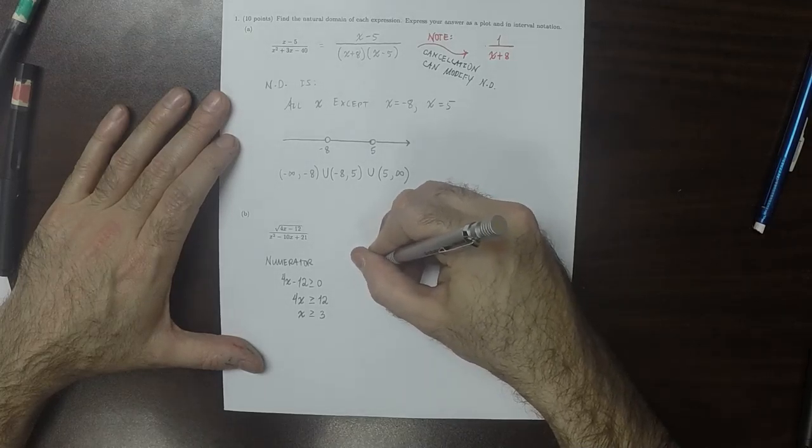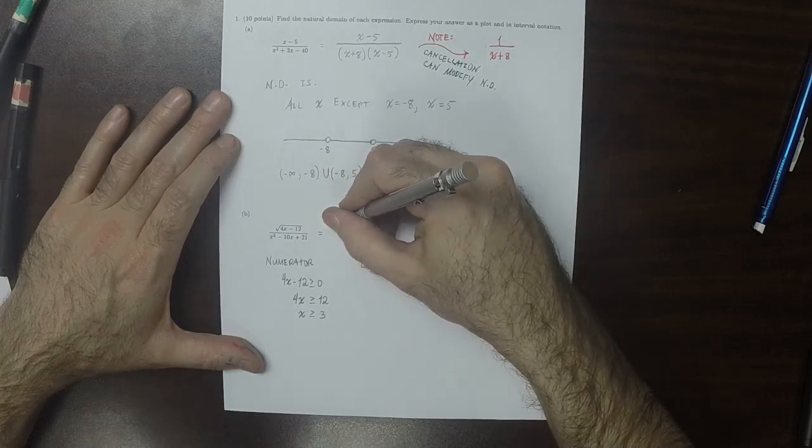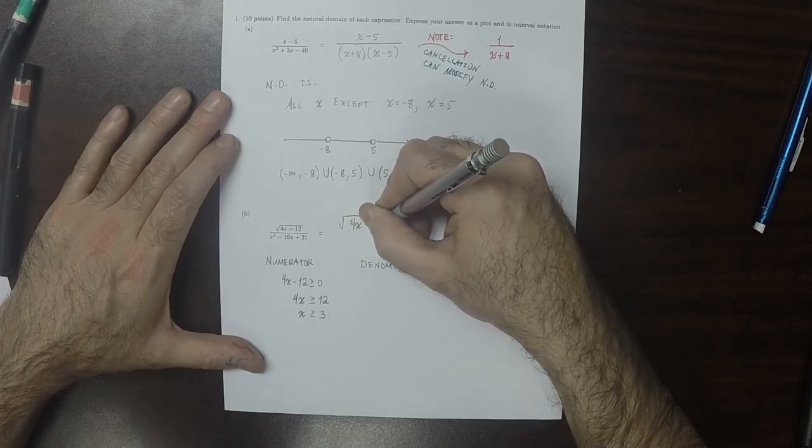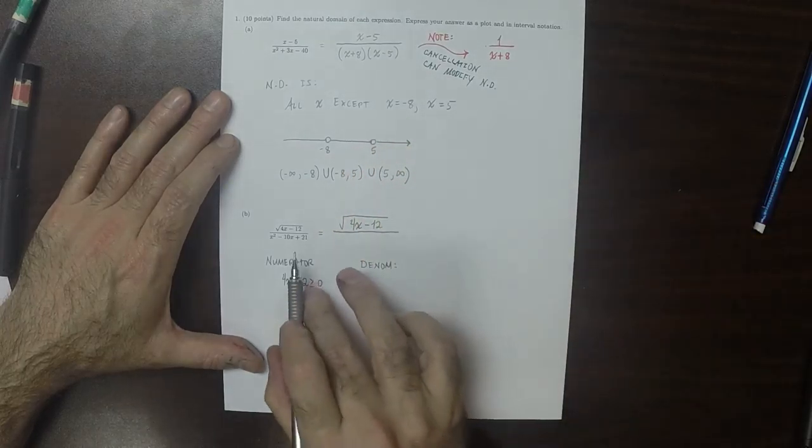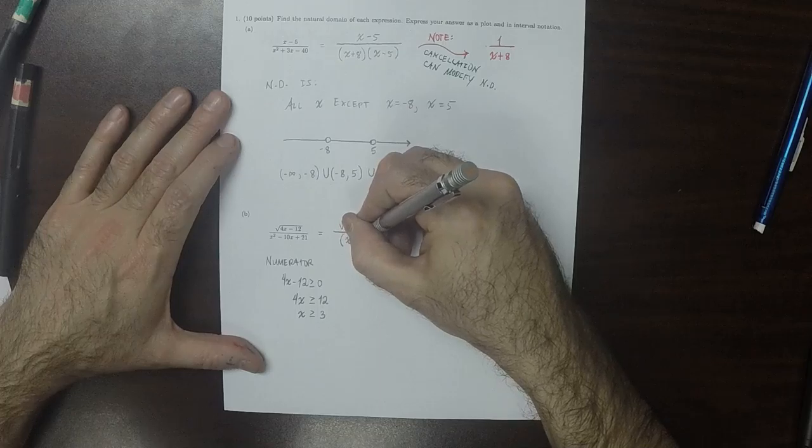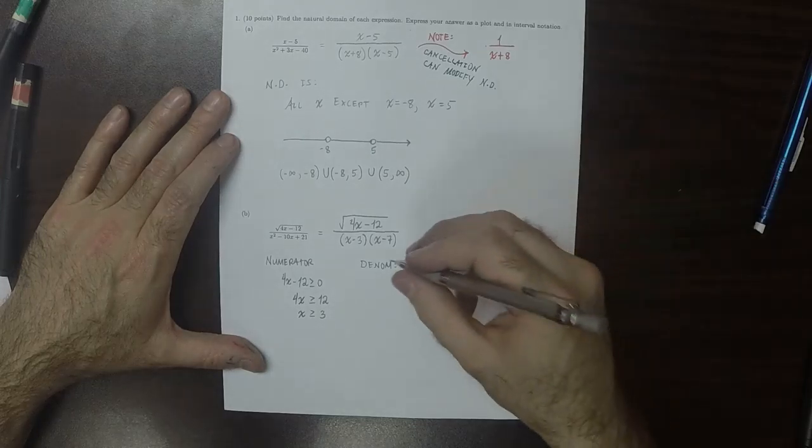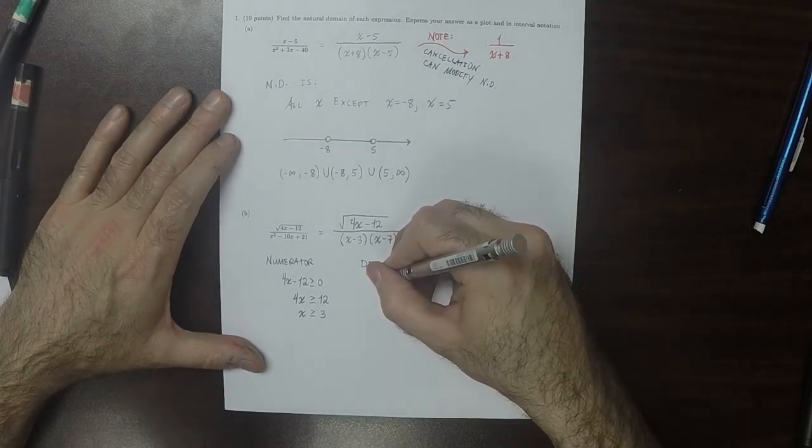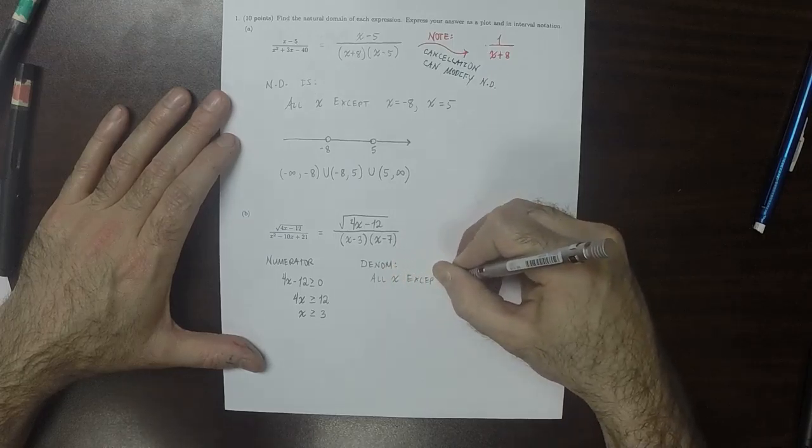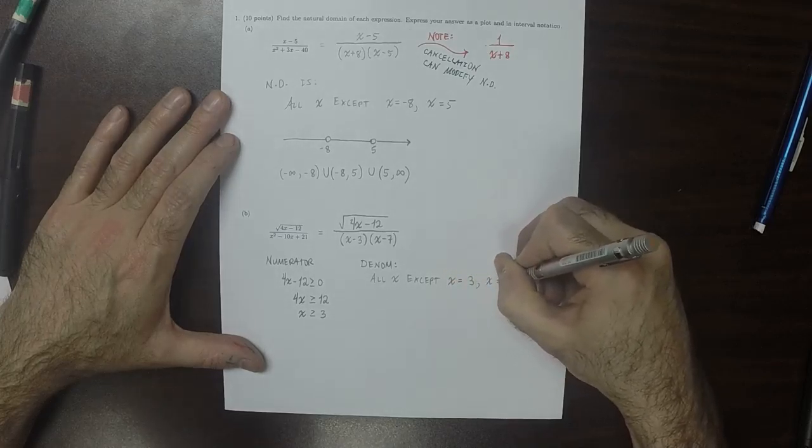The denominator, if it has any requirements, they can be found through factoring it. So can we think of two numbers whose product is 21 and whose sum is negative 10? Sure. How about x minus 3 multiplied by x minus 7?